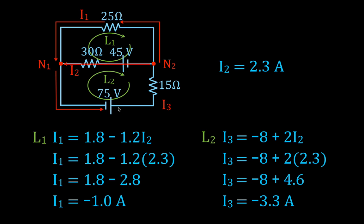Switching the arrow directions accordingly, we're all done. I1 is 1 ampere flowing counterclockwise. I2 is 2.3 amperes flowing from right to left. I3 is 3.3 amperes also flowing counterclockwise. That is the magnitude and direction for each current in each of the three branches, solved by carefully applying Kirchhoff's rules step by step and tracking all negative and positive signs.